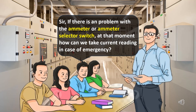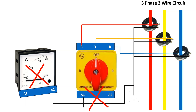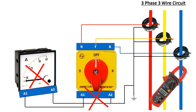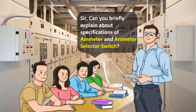If there is any problem with the ammeter or ammeter selector switch, how can we take a current reading in case of emergency? If there are any issues with the ammeter or selector switch, at that time we have to use a clamp meter manually to monitor the phase current like this.